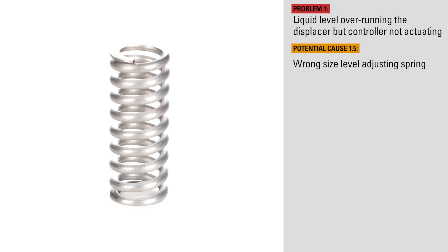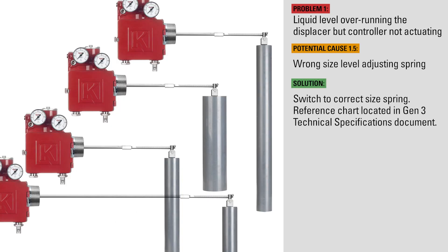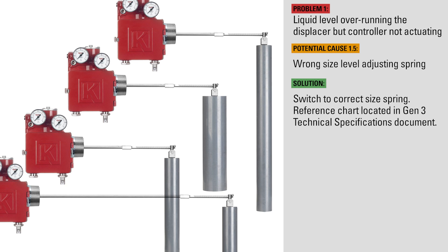Your displacer may be the right size, but you could have the wrong spring. Various combinations of displacer sizes and extension arm lengths could necessitate a heavier spring. This chart located in the Gen 3 Technical Specifications document specifies which spring you should use based on the displacer size and extension arm lengths. There are only two springs that could be used: the standard and the heavy spring.